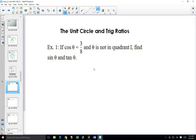First question. Cos of theta is three-eighths and theta is not in quadrant one. Find sine and tan.